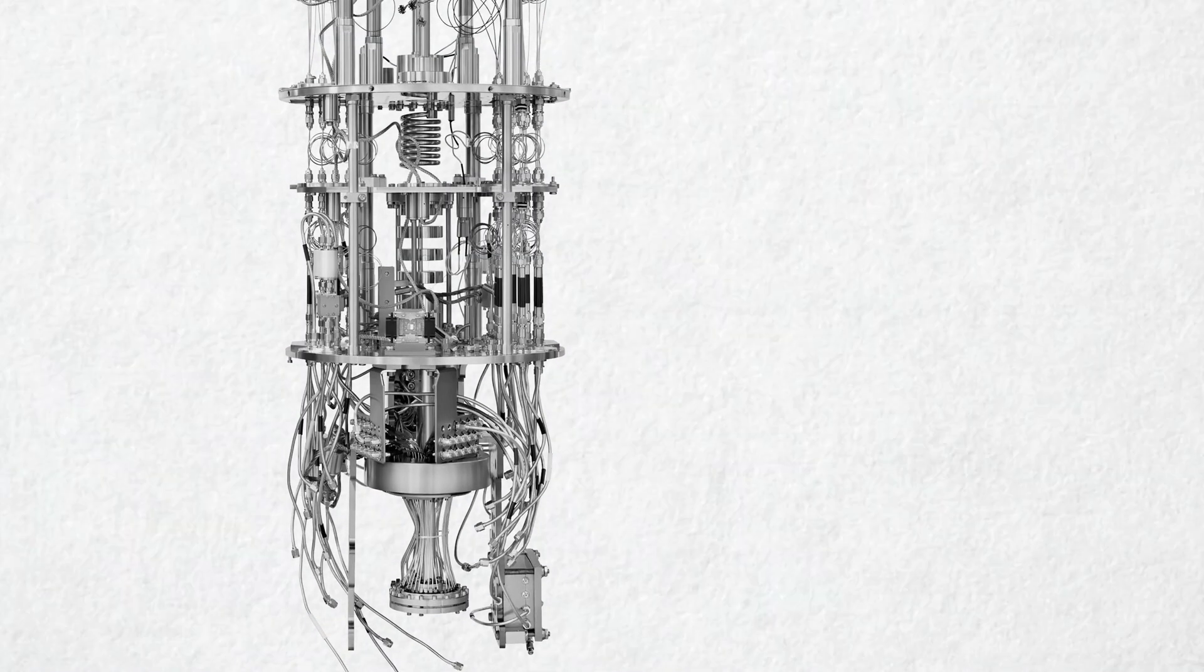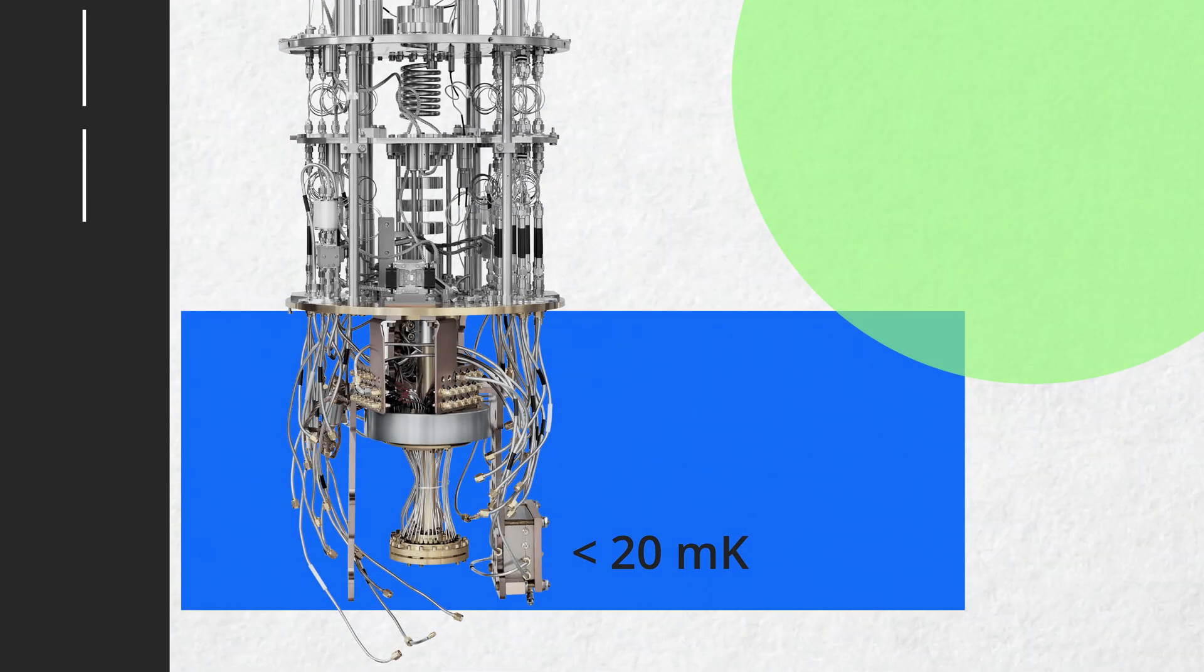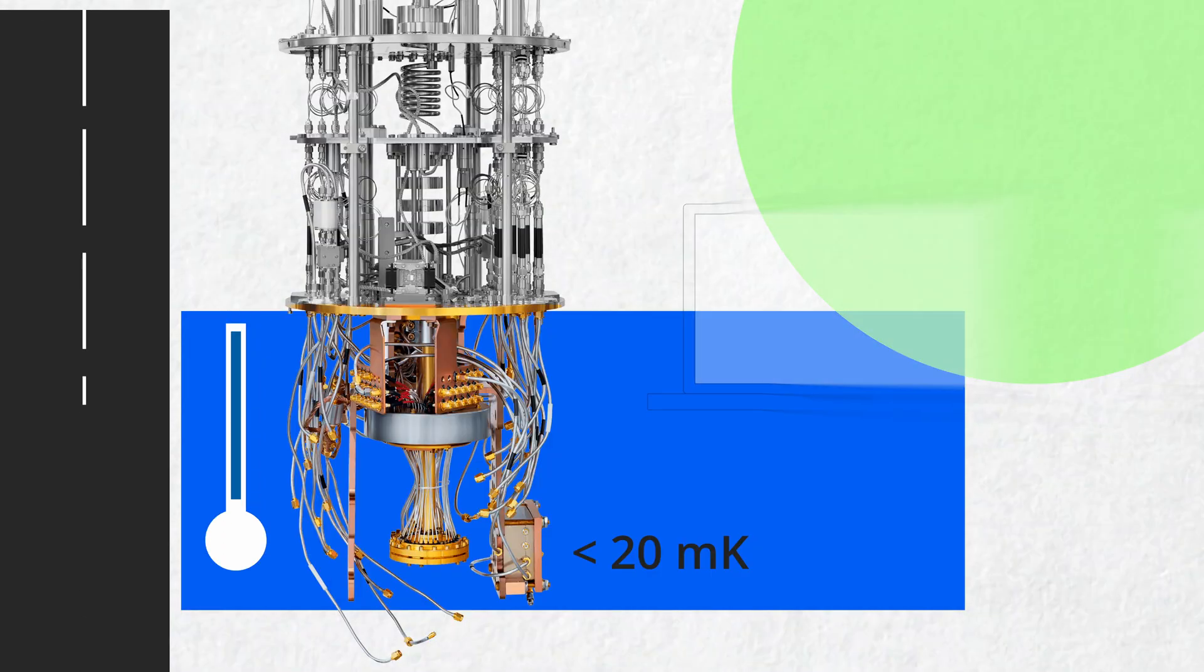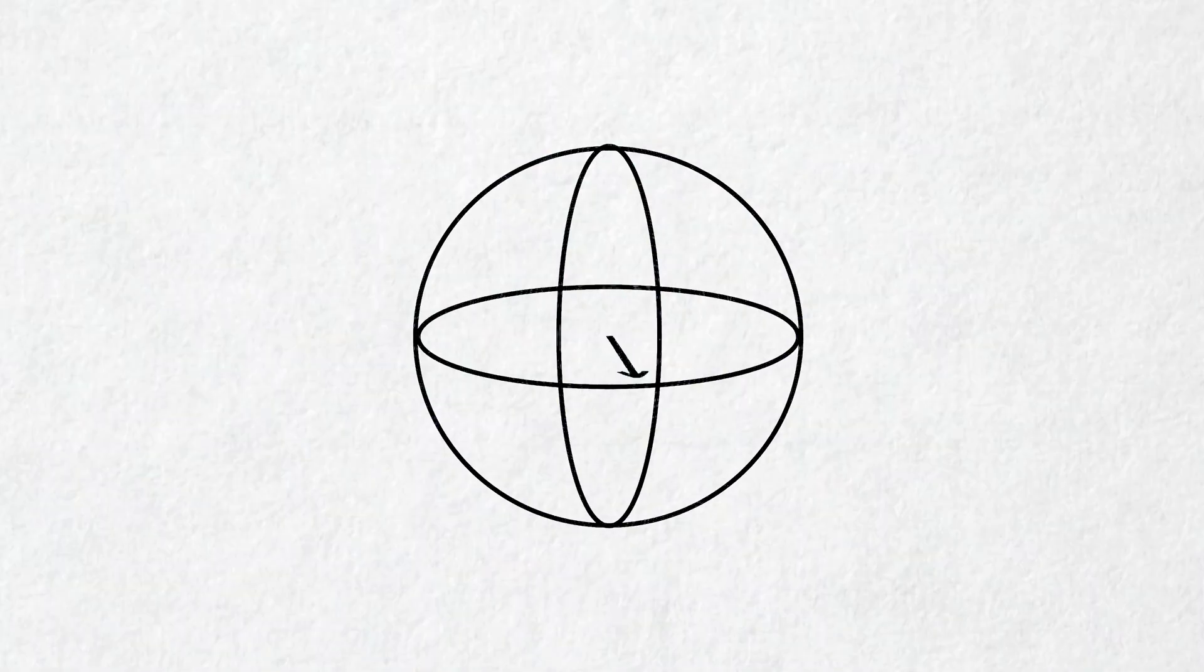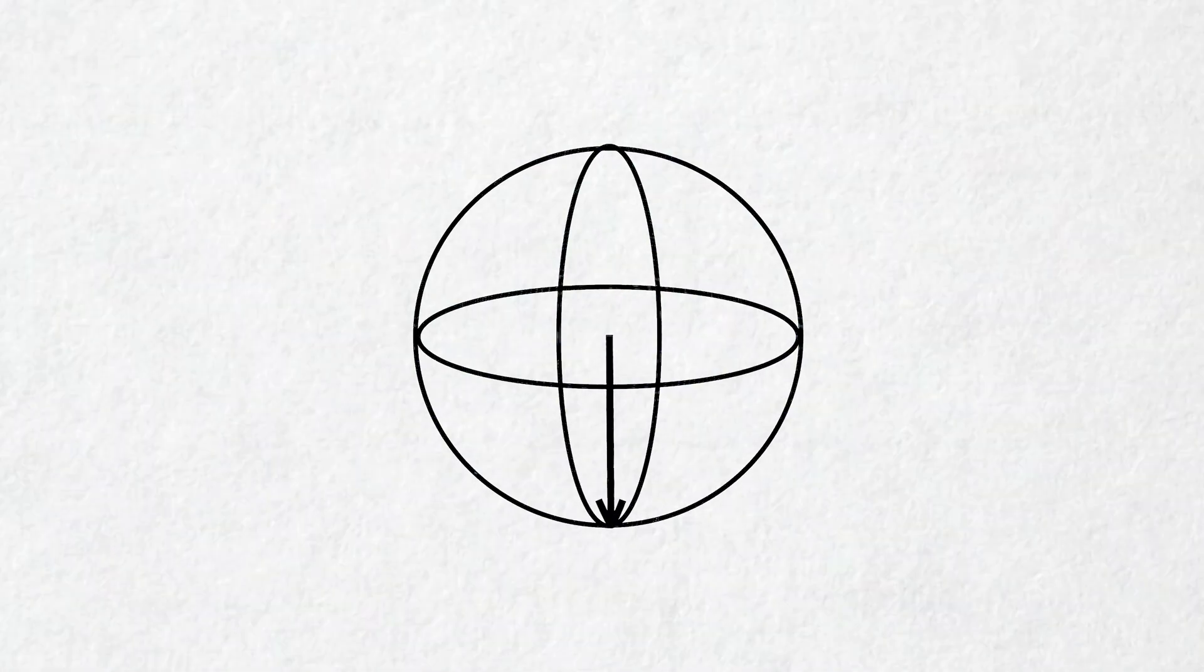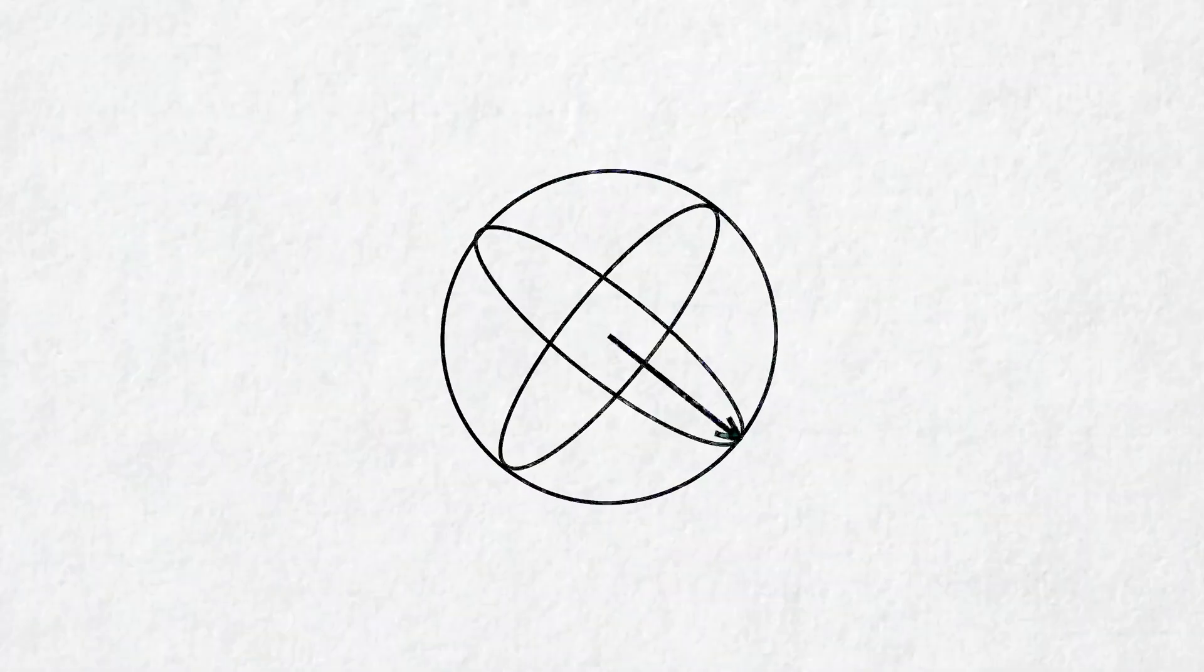Let's zoom in on that quantum floor. A tiny silicon or sapphire chip patterned with superconducting circuits that act as qubits. At these mK temperatures, electrons in the superconducting loops flow without resistance, and the qubits can occupy superpositions of 0 and 1 long enough to perform computations.